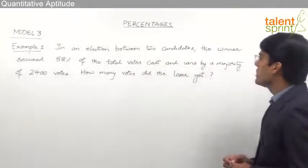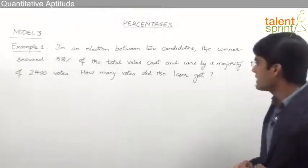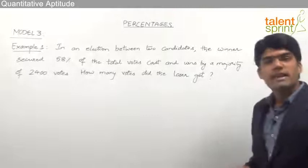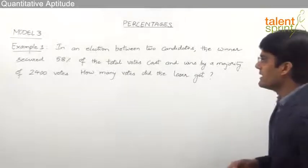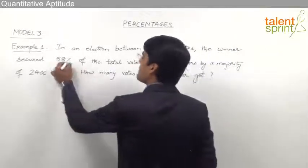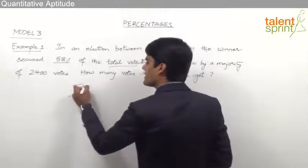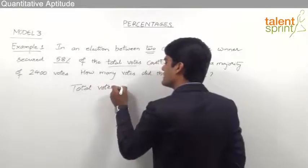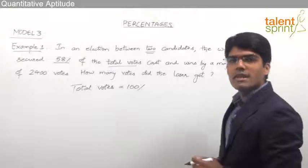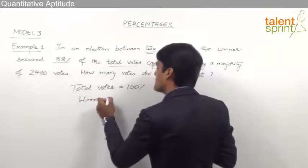In an election between two candidates, the winner secured 58% of the total votes cast and wins by a majority of 2400 votes. How many votes did the loser get? The election was between two candidates and the winner has got 58% of the total votes. Total can always be taken as 100%, so let us assume that the total votes cast is equivalent to 100%. The winner has secured 58% of the votes.